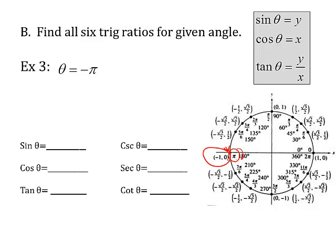So what is the sine? Well, the sine is always the y-coordinate, like we said before. So that's 0. Cosine is x-coordinate. It's negative 1. Tangent is y over x. 0 over anything is 0.